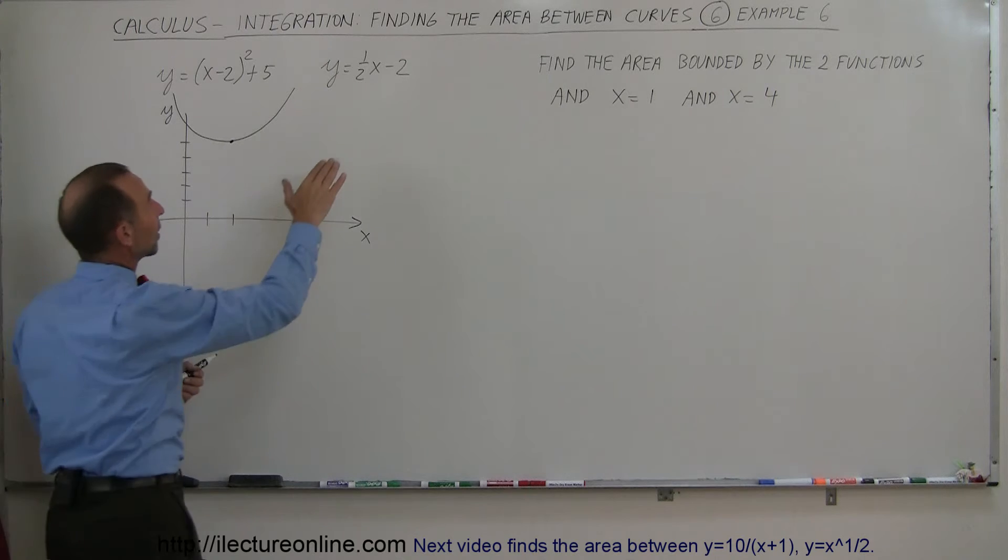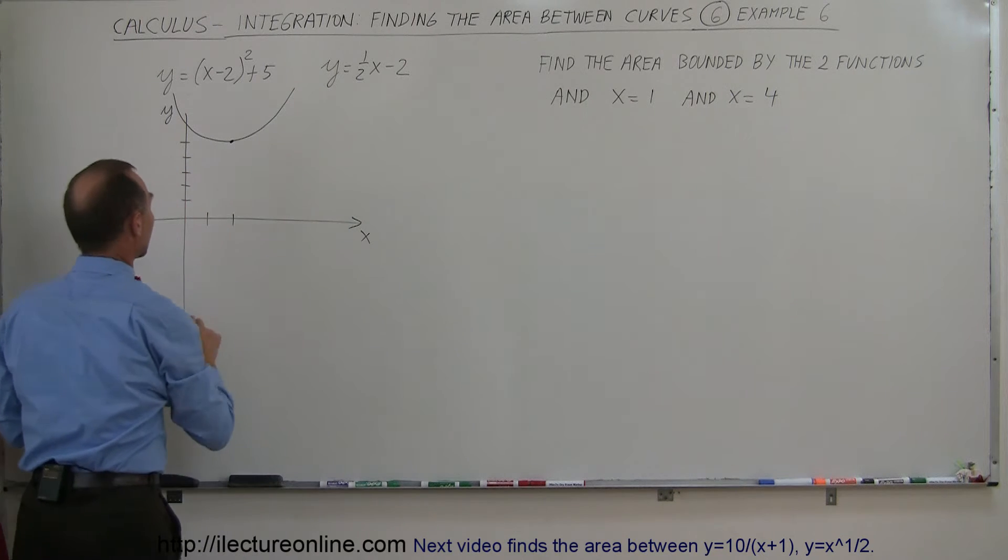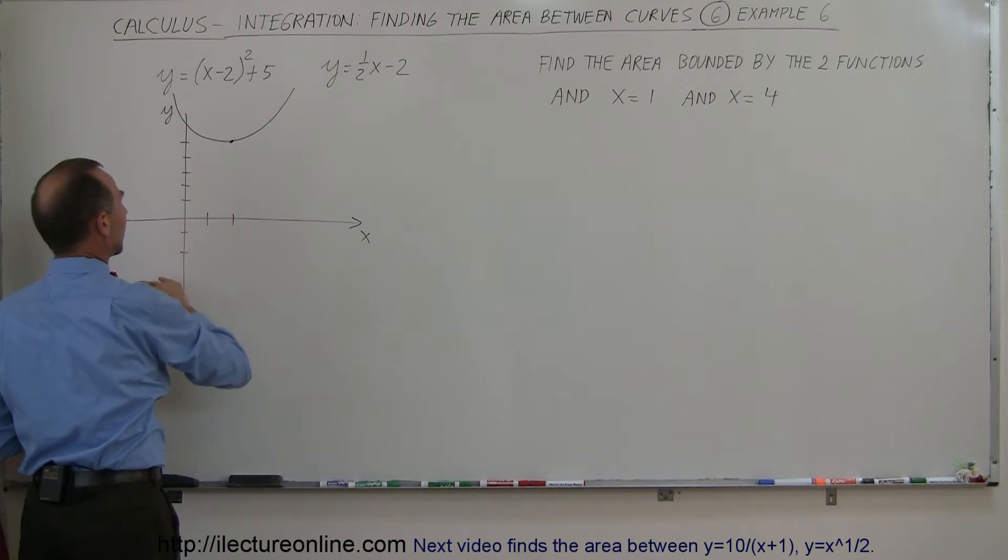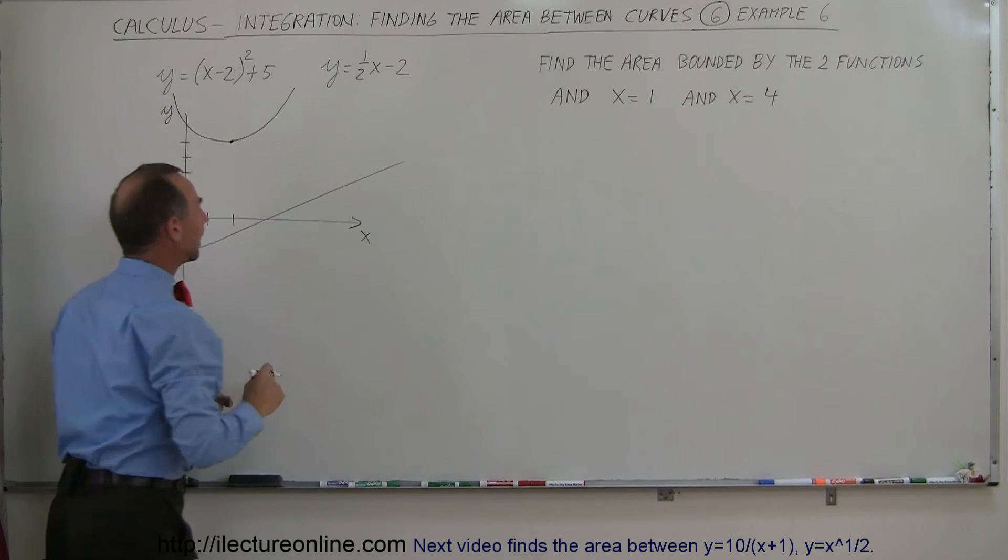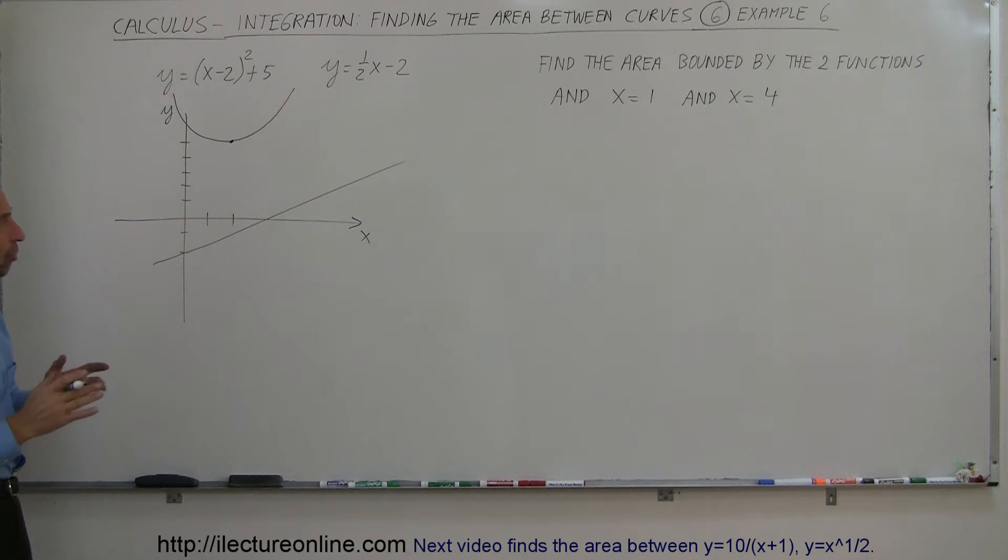My next function looks like it's a straight line. It has an intercept at minus 2 and has a slope of a half. Again, they don't have to be accurate, just approximate enough so that you can see what is going on.